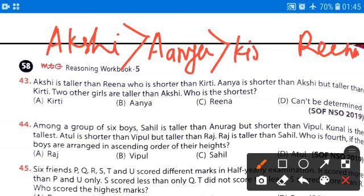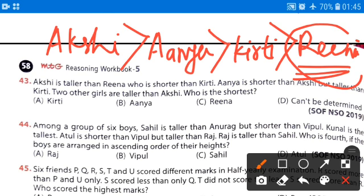Ananya is shorter than Akshi but taller than Kirti. She is taller than Kirti. Two other girls are taller than Akshi. Who is the shortest? From this arrangement, it is very clear that Rina is the shortest girl. In this arrangement, we have found that the shortest girl is Rina. The correct answer will be option C that is Rina.